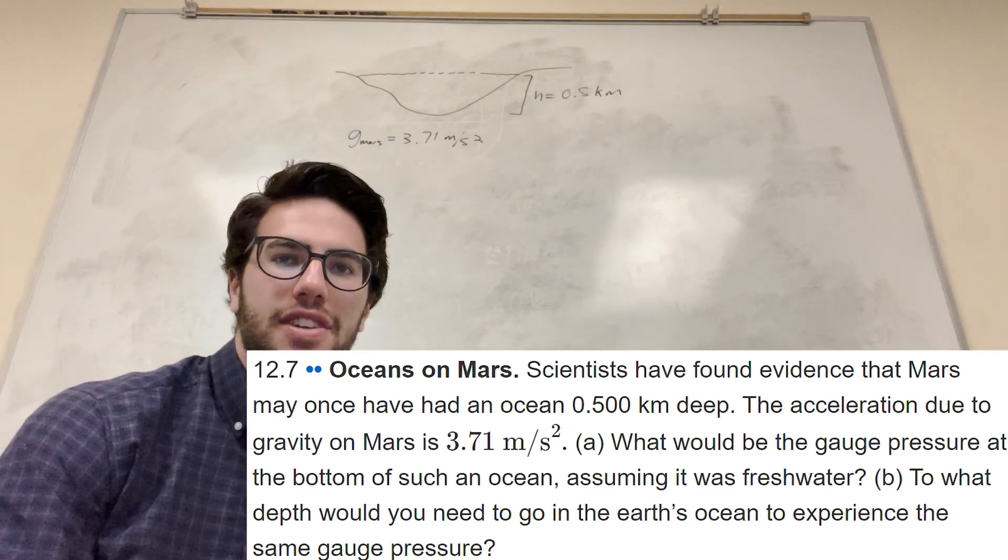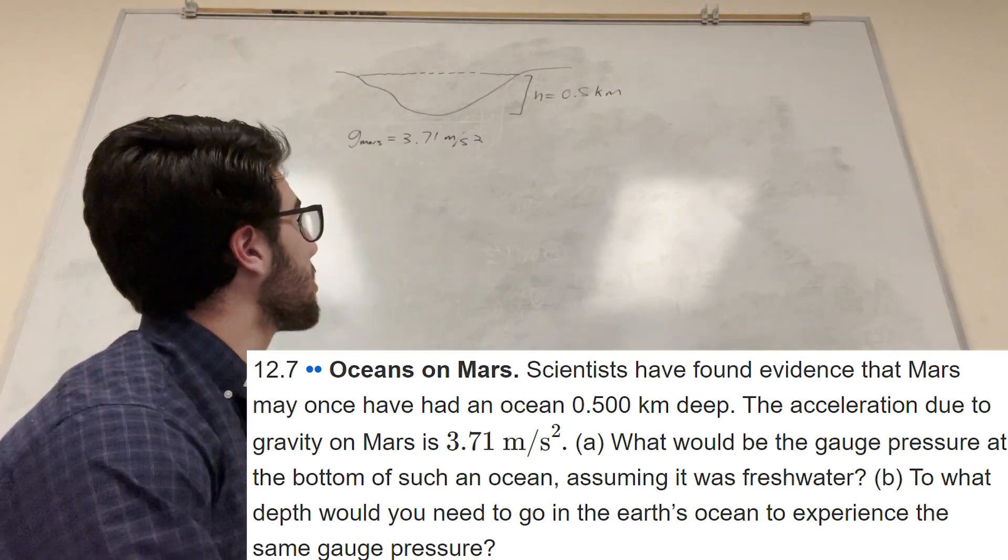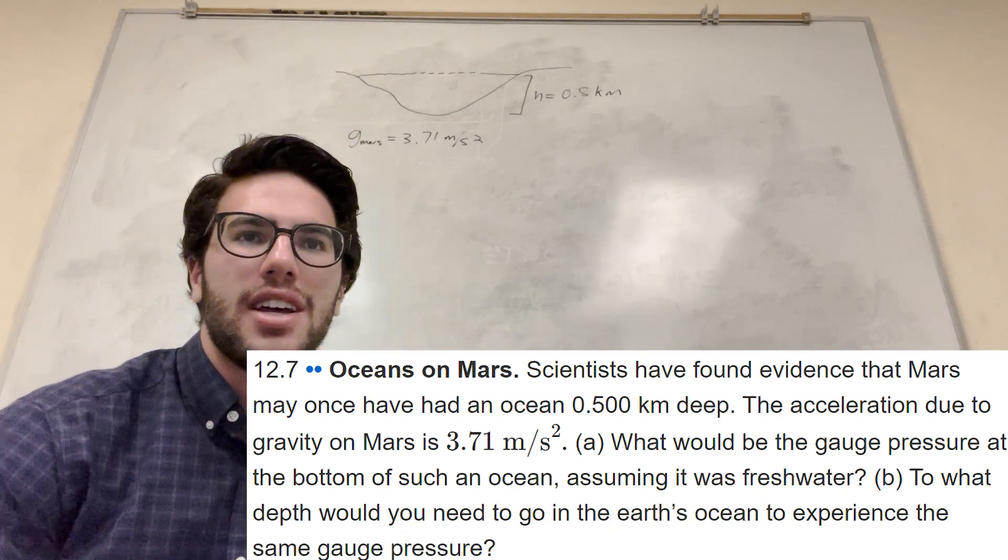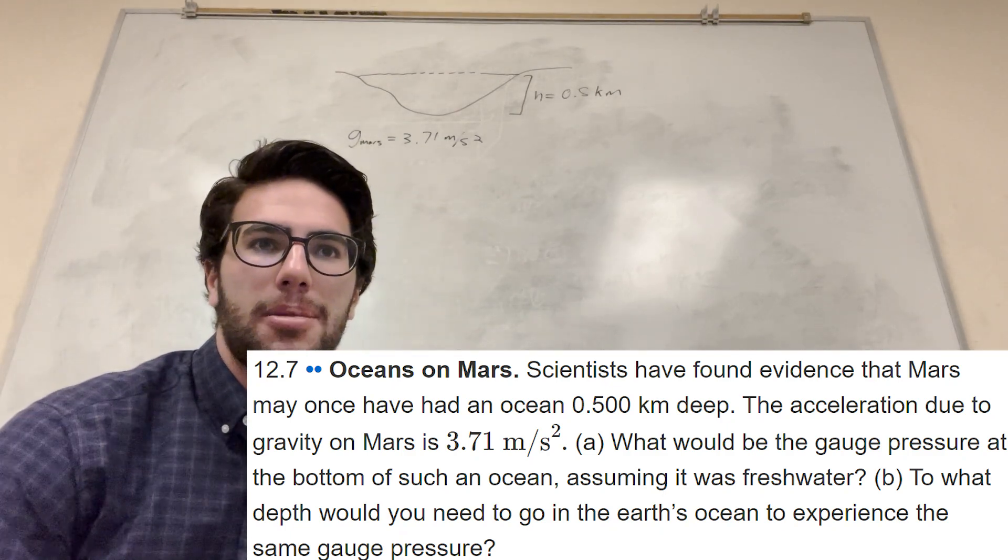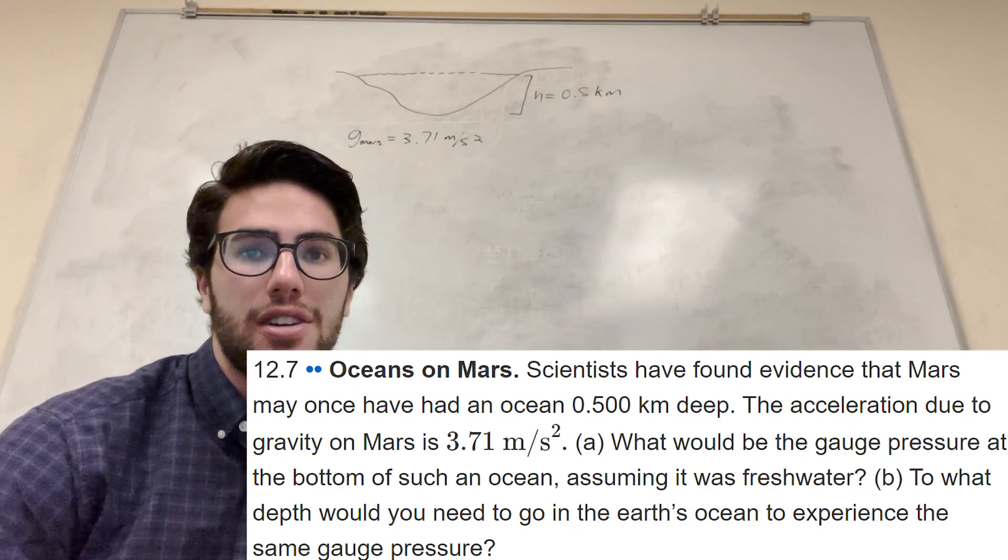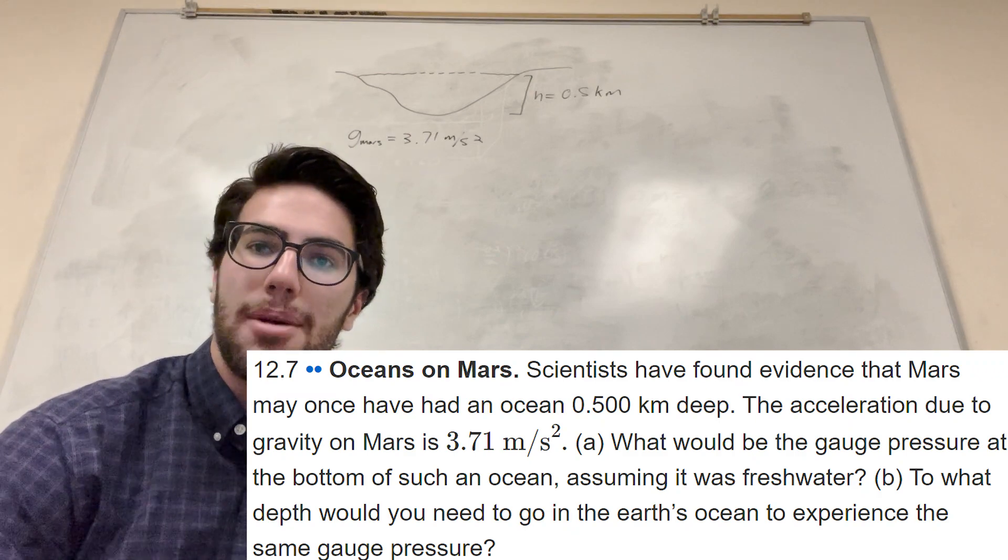What's up Cal gang? Alright, so we got this physics problem here. So it says that we're on Mars, right? And it says that Mars used to have oceans that were half a kilometer deep. And it wants us to find the gauge pressure at the bottom of such an ocean. And then part B wants us to find how far on Earth's ocean would he have to go to experience the same gauge pressure.